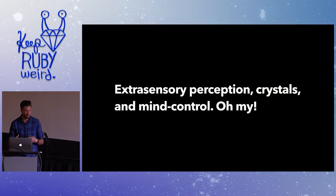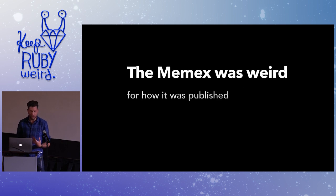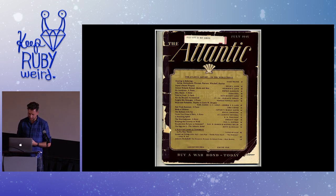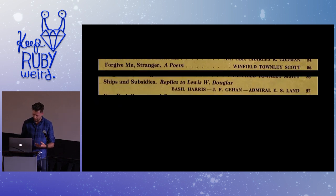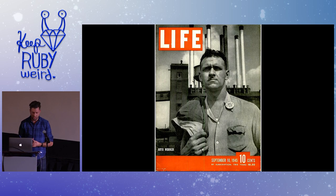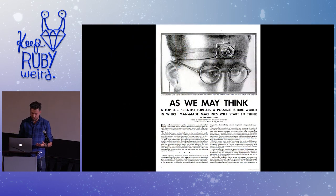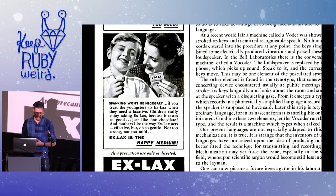Even later, he went into weirder territory — thinking about using crystals for persistence layers and mind control. Again, it was less about specific technologies and more about the idea of what a Memex should do for individual users. It was also weird how it was published: this important piece of computer science history was published in the Atlantic Monthly, a general audience magazine, alongside poetry and a novel called 'The Egg and I.' The next version came out in Life magazine, surrounded by a laxative ad. One of the biggest ideas in computer science — you wouldn't have noticed it if you weren't paying attention.